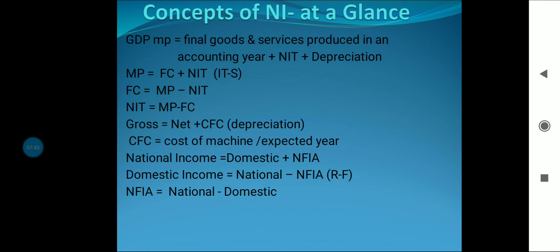For example, suppose there is a machine worth rupees 10 lakh and its expected lifetime is 10 years. After completion of 10 years, it will be non-repairable or expected obsolescence will have occurred. So its depreciation value will be 10 lakh divided by 10 years, which is 1 lakh every year. This 1 lakh every year is treated as the provision for depreciation, which can occur due to normal wear and tear and due to natural obsolescence.